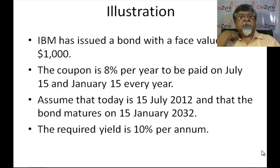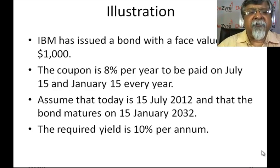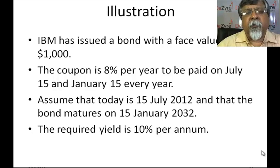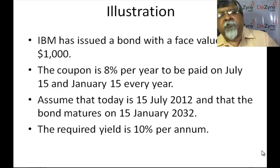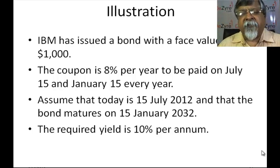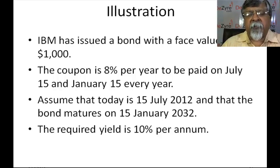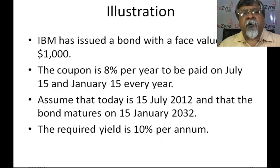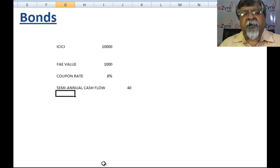For instance, assume that IBM has issued a bond with a face value of $1,000. Coupon is 8% per year to be paid on July 15 and January 15 every year. Most bonds pay interest on the 1st or the 15th of the month, and you can make out the coupon dates from a code sheet as follows.